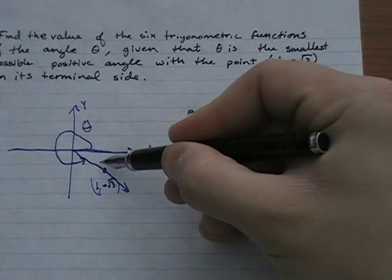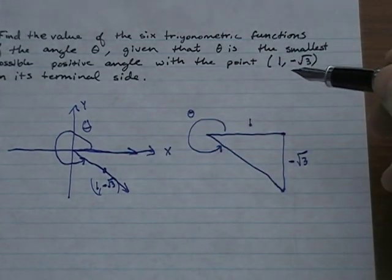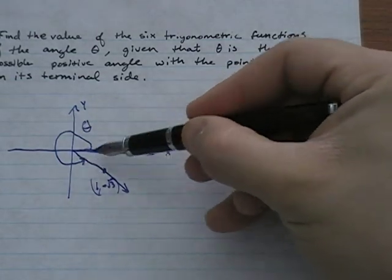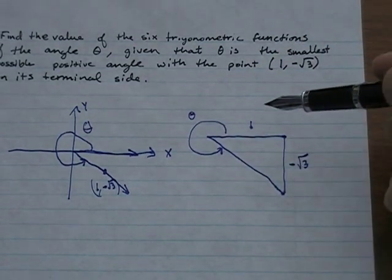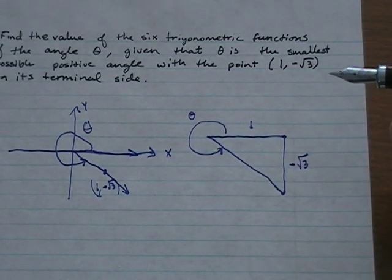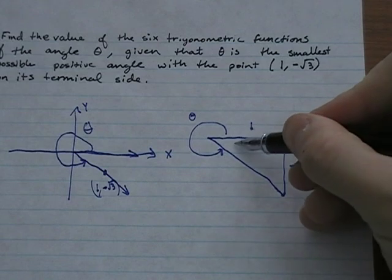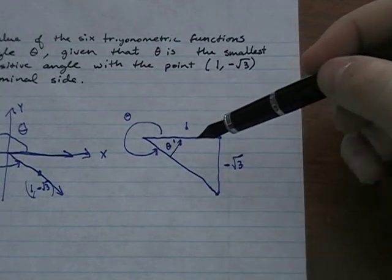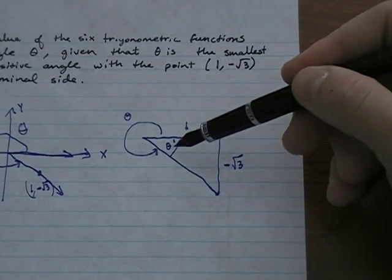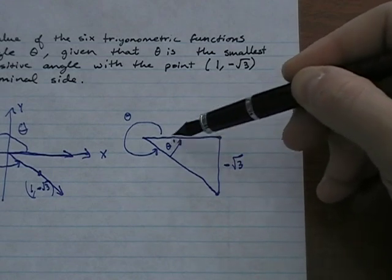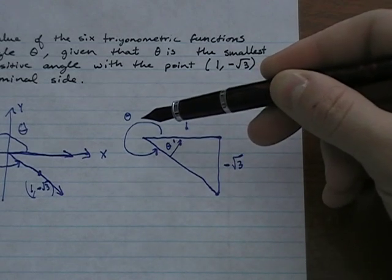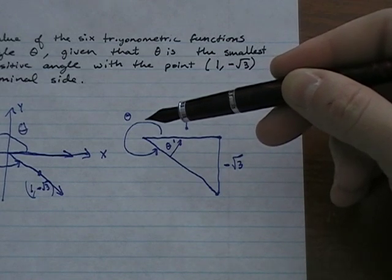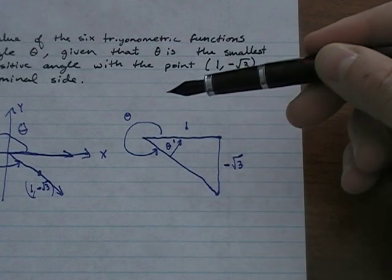I teach my classes to use the reference angle, theta prime. This angle theta is going to be greater than 270 degrees — it's a very large angle. I really like to use the right triangle definitions of trig functions, and if I use theta prime I can fit it inside a right triangle. The values of sine, cosine, and tangent of theta prime and theta are identical; the only difference is that theta prime is typically a smaller angle.